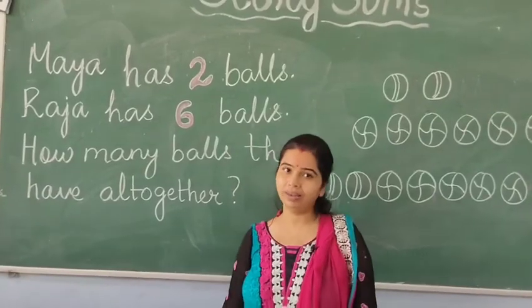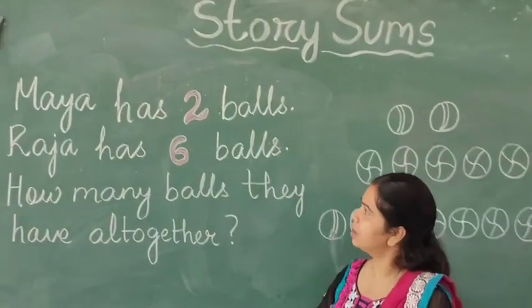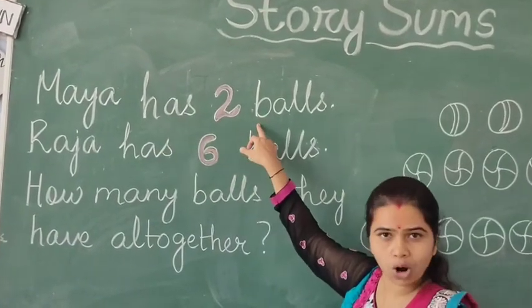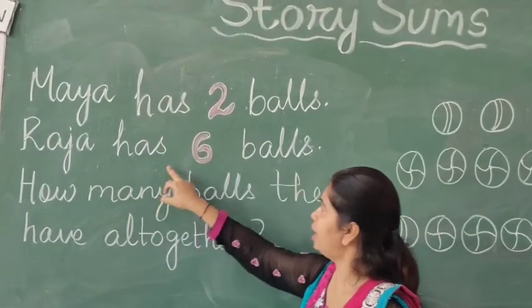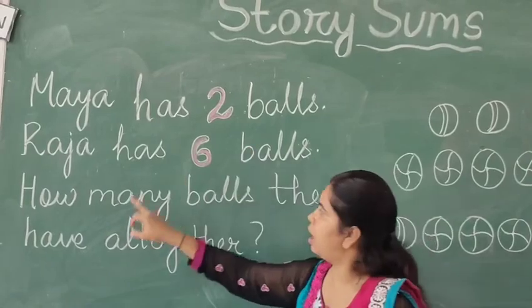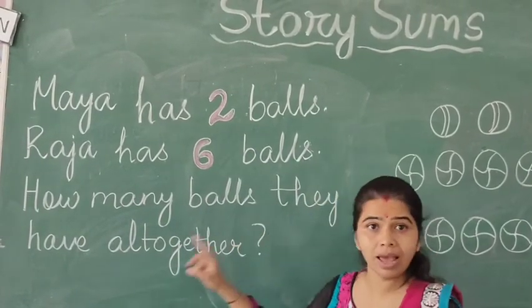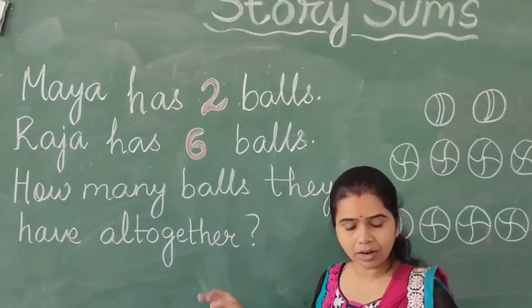So my next story sum is: Maya has two balls. Raja has six balls. How many balls do they have all together?